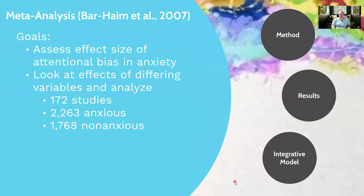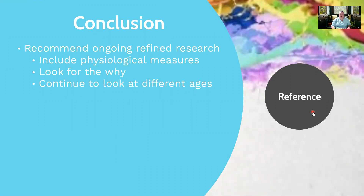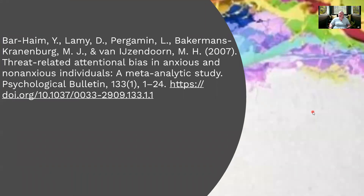I'm going to put that reference up here now — you can access this article online. In conclusion, they basically recommended that research still continue, that people continue to study this, especially the differences between adults and children. They also proposed that yes, it is interesting that attentional bias is associated with anxiety, but they also challenged researchers to look at the why — what might be driving this attentional bias to threatening information for people with anxiety. They encouraged researchers to continue to look for answers and do refined research with clear procedures that can be replicated. This is a super helpful article if you want to learn more about attentional bias and anxiety.